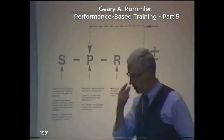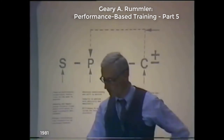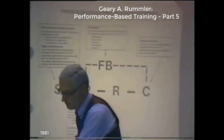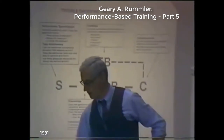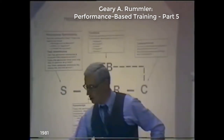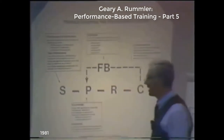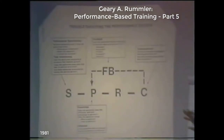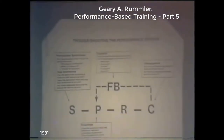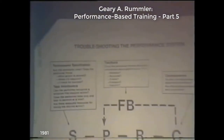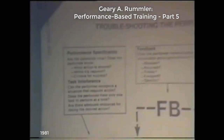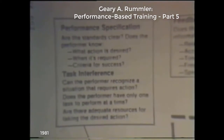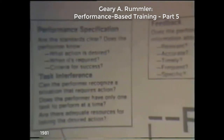From the standpoint of training needs analysis, what you can do with that model is put together some troubleshooting tools. Basically, what we do is take our ideal characteristics of the performance system and use it as a template or an overlay to put over any real situation and ask some questions — where does the actual situation vary significantly from the ideal, and where there's a variance, we've got to correct it.